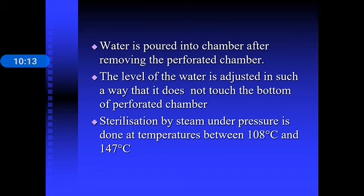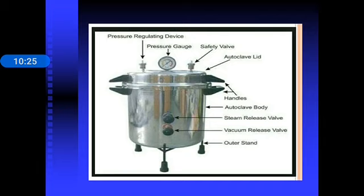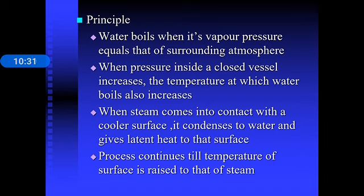The autoclave uses sterilization by steam under pressure at temperatures between 108–147°C. The principle is that when pressure inside a closed vessel increases, the temperature at which water boils also increases. When steam contacts a cooler surface, it condenses and transfers heat to that surface, continuing until the surface temperature equals that of the steam.